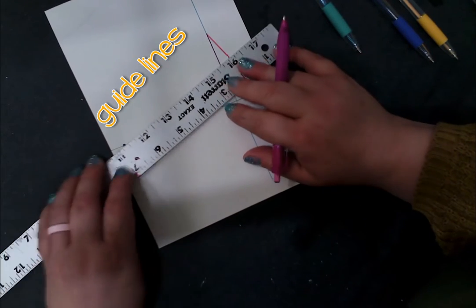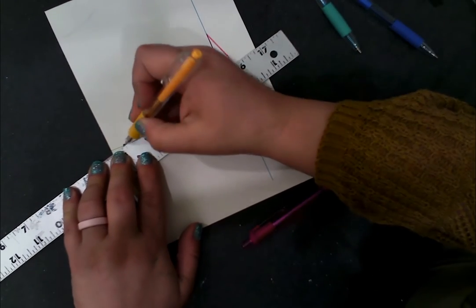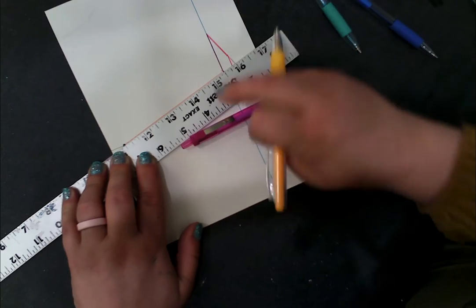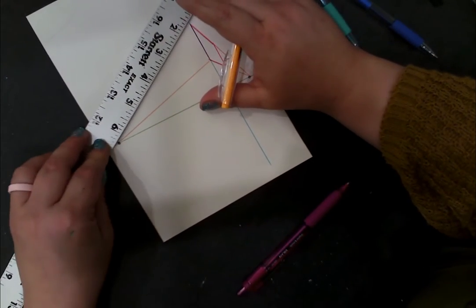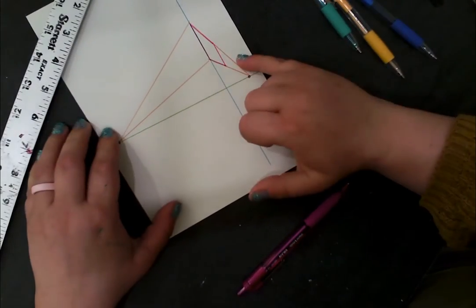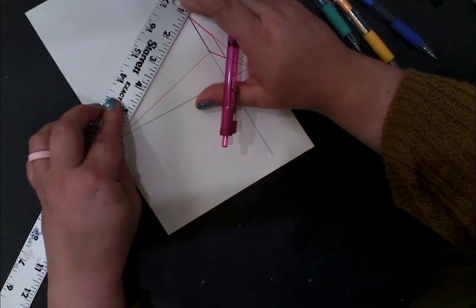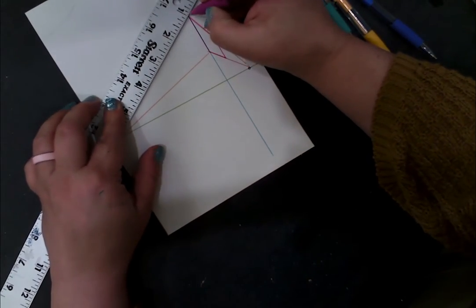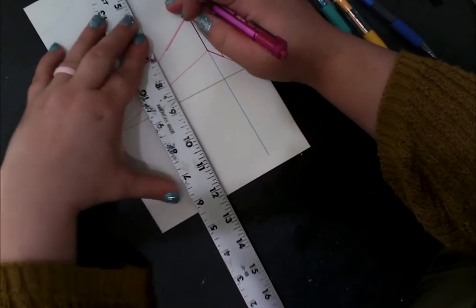I'm going to come in with my guidelines and go from the vanishing point to my station point for the bottom and for the top. Now I have my right side, and I'll come in with my pink pen and start developing the left side of this rectangular prism.